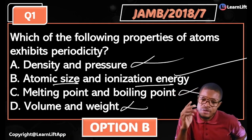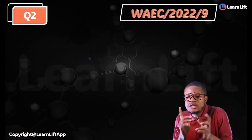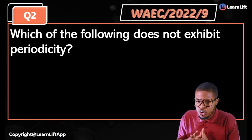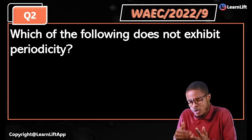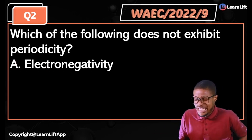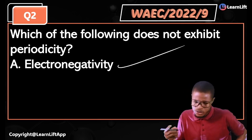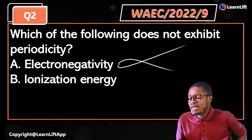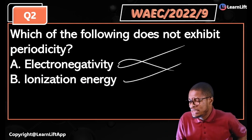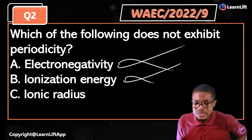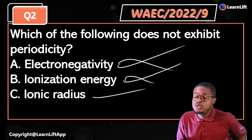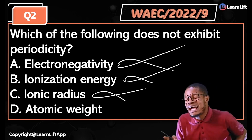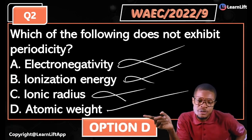WAEC 2022 Question 9: 'Which of the following does NOT exhibit periodicity?' Option A: electronegativity — it will exhibit periodicity, so it cannot be the answer. Option B: ionization energy — it will exhibit periodicity, so not the answer. Option C: ionic radius — it will definitely exhibit periodicity. Option D: atomic weight — this is the one that does not exhibit periodicity. The correct answer is Option D.